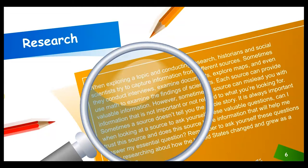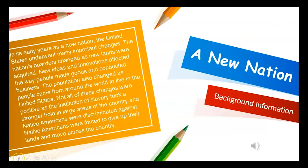When exploring a topic and conducting research, historians and social scientists try to capture information from different sources. Sometimes they conduct interviews, examine documents, explore maps, and even use math to examine the findings of scientists. Each source can provide valuable information. However, sometimes a source can mislead you with information that is not important or not related to what you've been looking for. Sometimes a source doesn't tell you the whole story. It is always important when looking at a source to ask yourself: Can I trust this source? And does this source have information that will help me answer my essential question? Remember to ask yourself these questions when researching about the United States and how it changed and grew as a new nation.